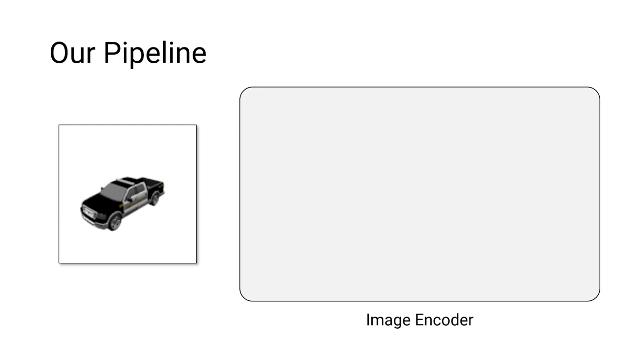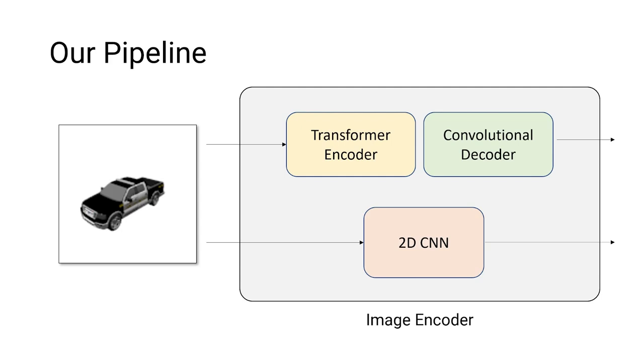There are two branches in our image encoder. The first branch is the transformer branch, which consists of a transformer encoder and a convolutional decoder. The second branch is a simple 2D CNN, similar to the original Pixel NERV model, which processes the input image into feature maps. Let's talk more about the transformer branch.